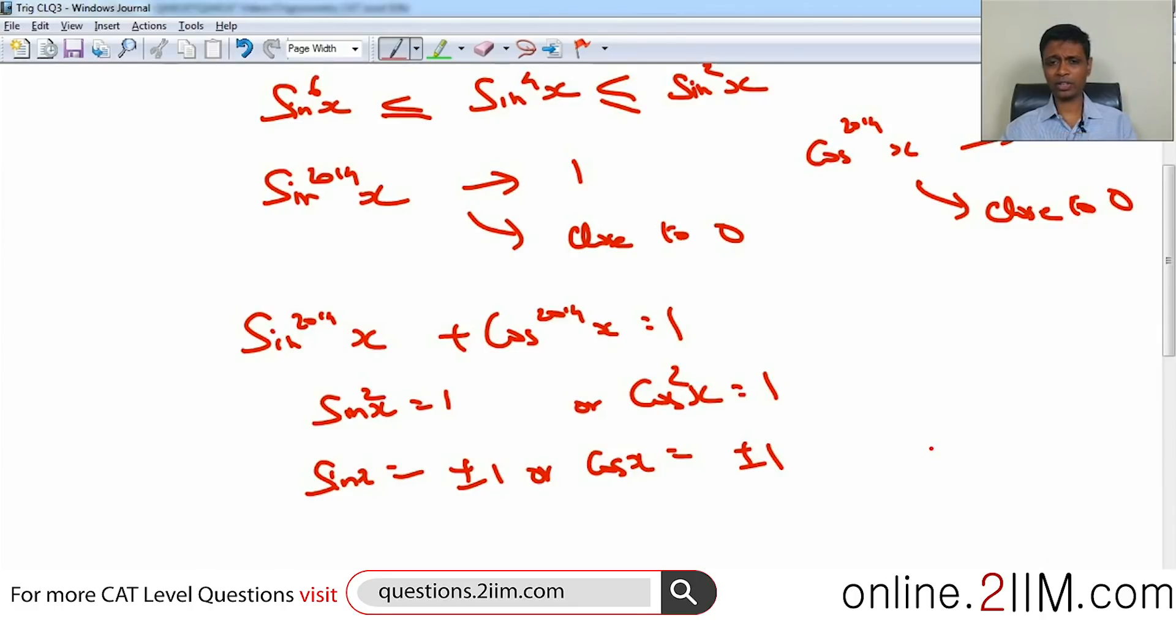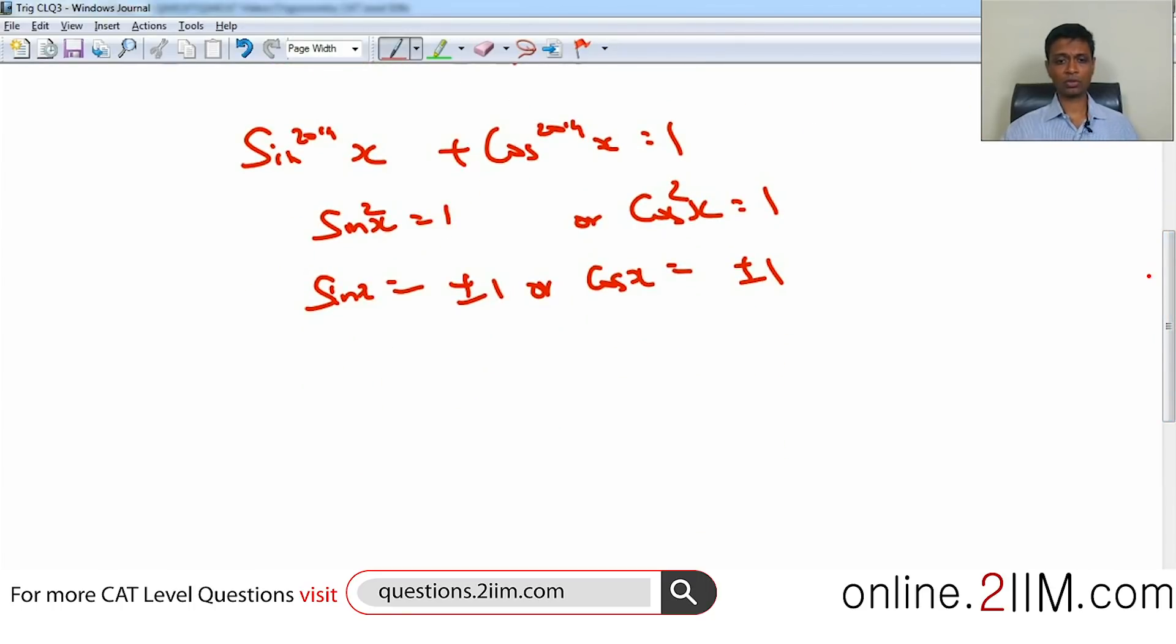One of these two. Sin(x) will be plus 1 when it is 90 degrees, minus 1 when it is 270 degrees. Cos(x) will be plus 1 and minus 1 at 0 and 180. So every 90 degree turning point, we will have either sin(x) as 1 or cos(x) as 1. Now, this question effectively becomes, from minus 5π to plus 5π, how many 90 degree points do we have? How many multiples of π/2 do we have? π is 180, π/2 is 90.